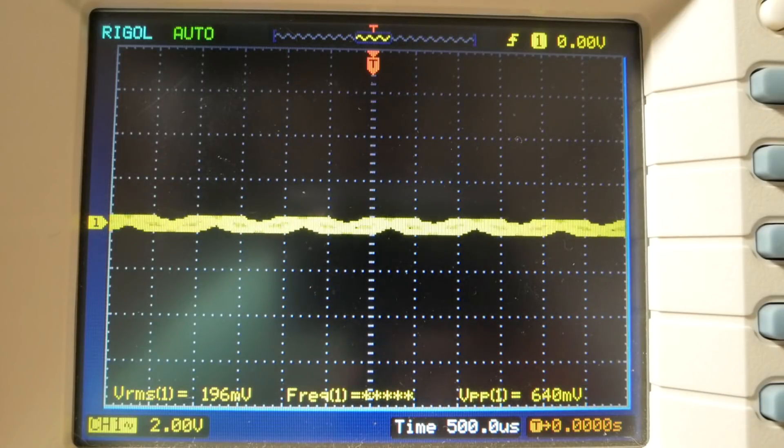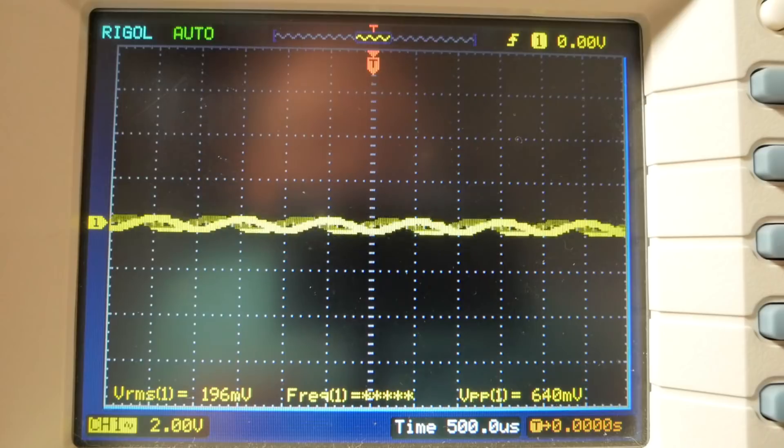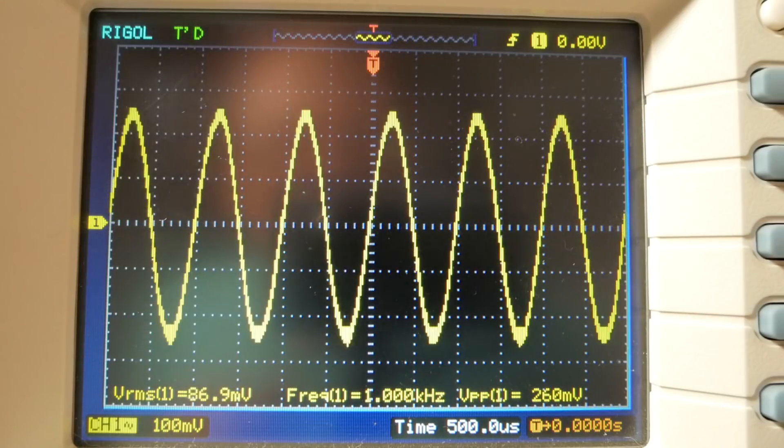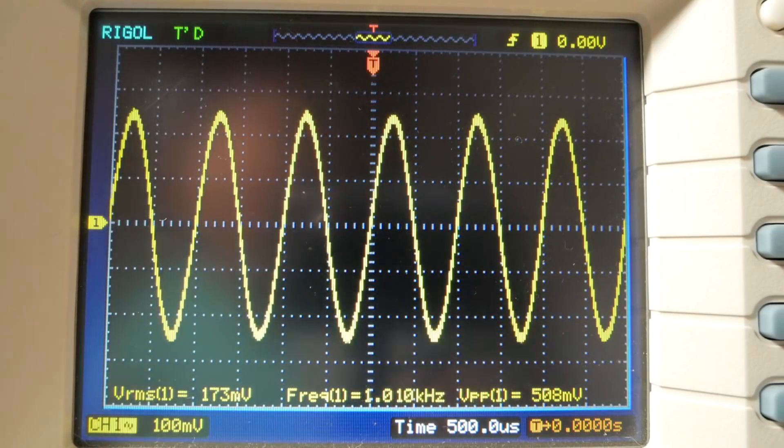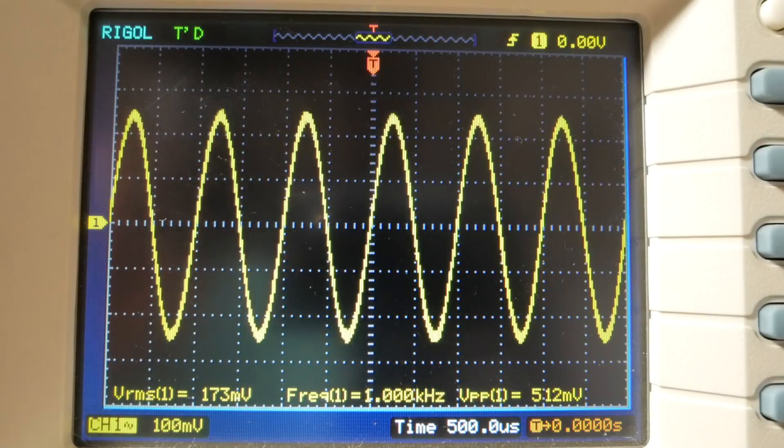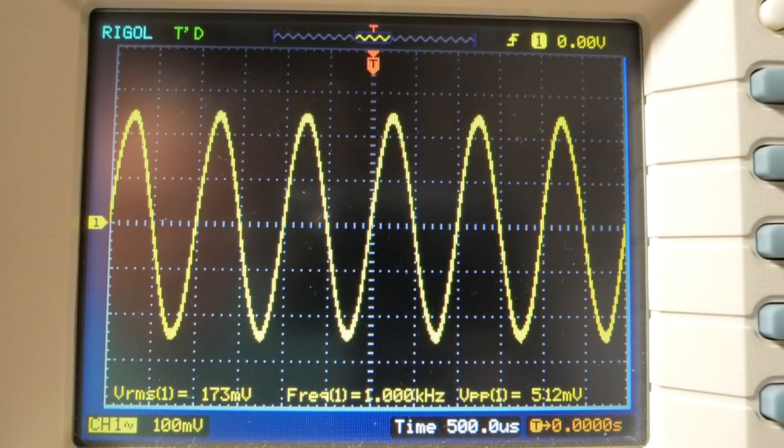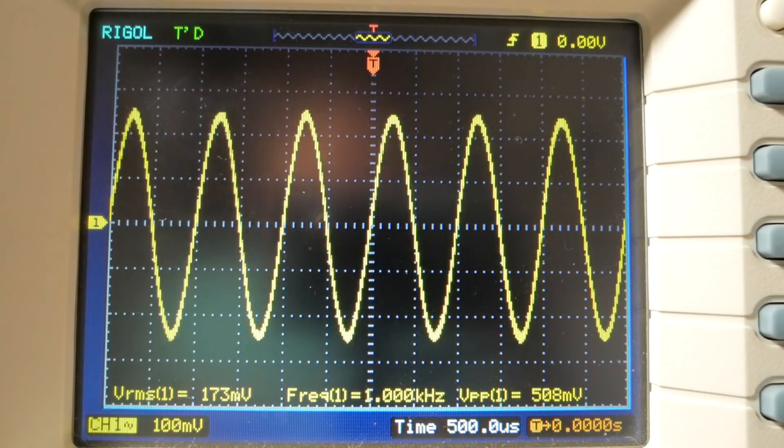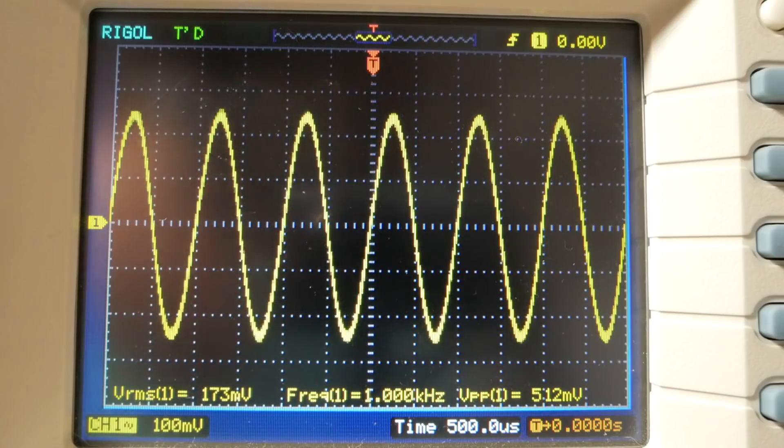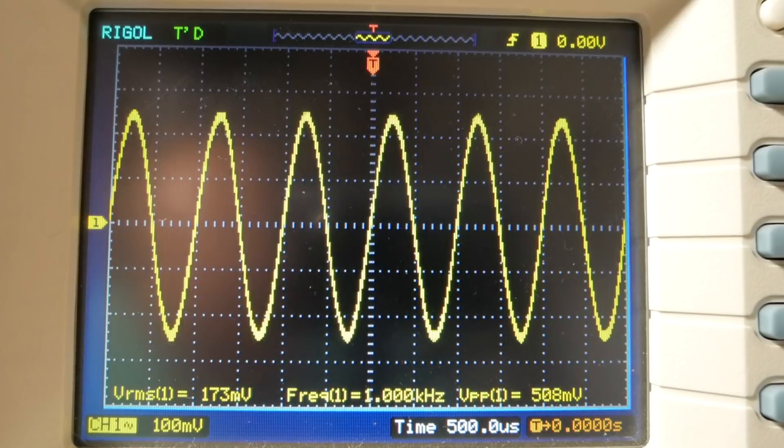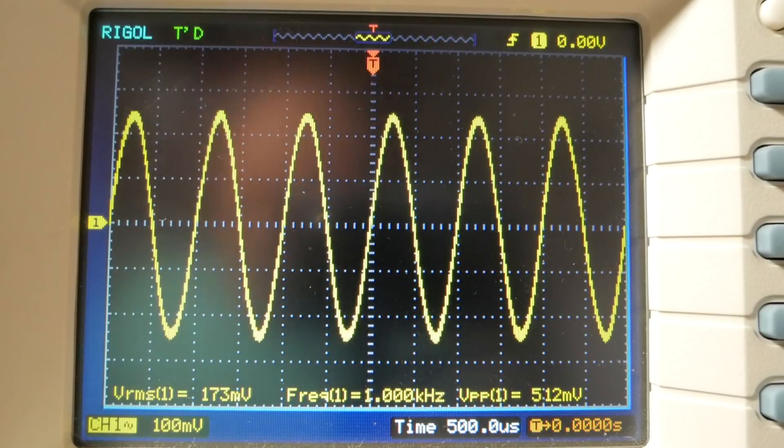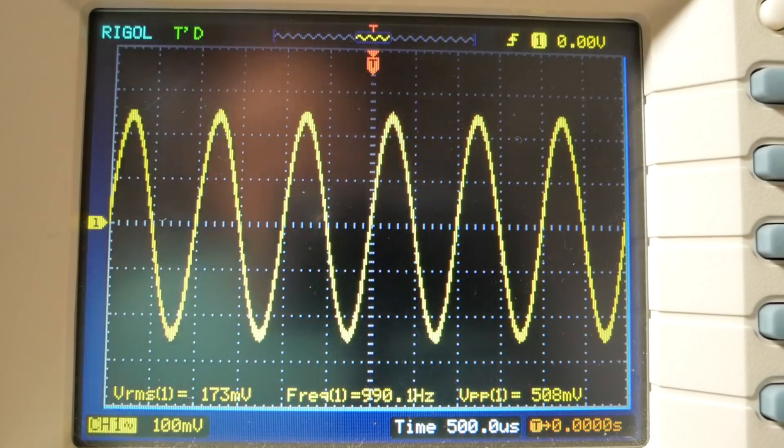So let's measure what the input signal is. Move over to the input and of course I'll have to turn that up. So to get three volts out I have to put 173 millivolts in or 0.173 volts. I'll punch that up on the calculator real quick. So it has a gain of 17.34, so I'll note that and now we'll look at the distortion.